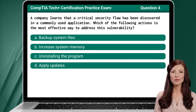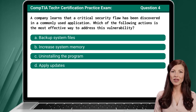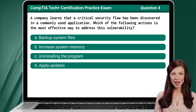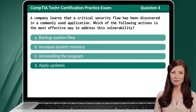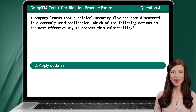Question 4. A company learns that a critical security flaw has been discovered in a commonly used application. Which of the following actions is the most effective way to address this vulnerability? The answer is D: apply updates.